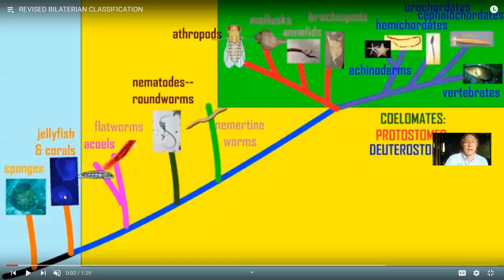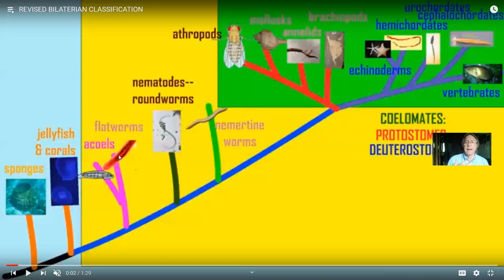Jellyfish and corals have tissues, but they don't have organs. They don't have a brain, so they are the next most primitive branch. The earlier classification had a number of flatworms, like the acoels, and the flatworms which I ended the previous video with. They were primitive because they're flat — they don't have segments, their mouth is still in the center of their body like a jellyfish, they have an incomplete digestive tract with only one opening, and they don't have a circulatory system or a heart.